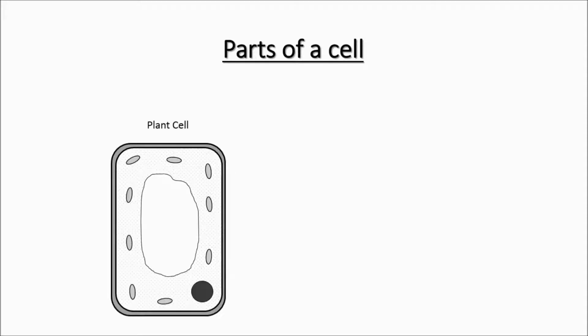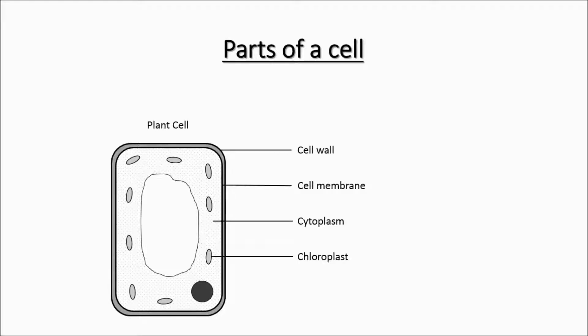Let's label the parts of a cell. In the diagram of the plant cell, the outer line represents the cell wall. The inner line is the cell membrane. Within the cell membrane lies the cytoplasm. The chloroplast and the nucleus are found in the cytoplasm.